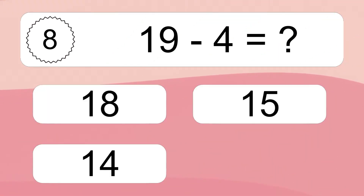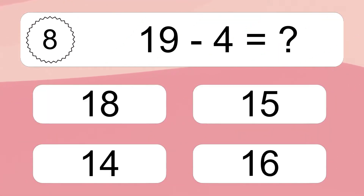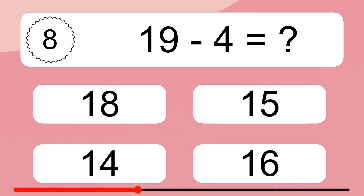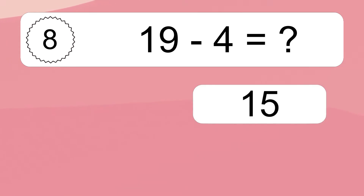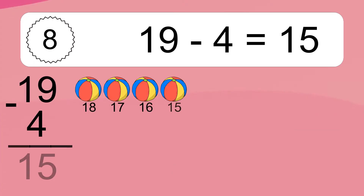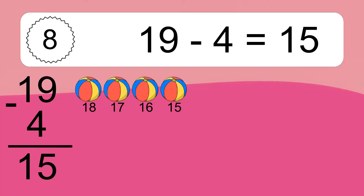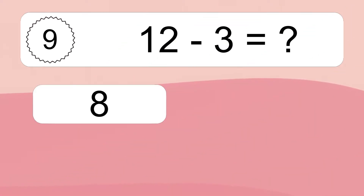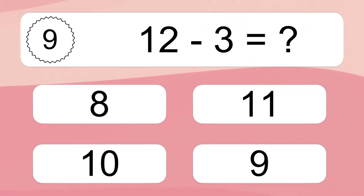19 minus 4 equals what? 19 minus 4 equals 15. Let's count it: 18, 17, 16, 15.